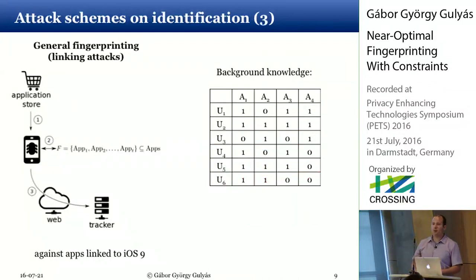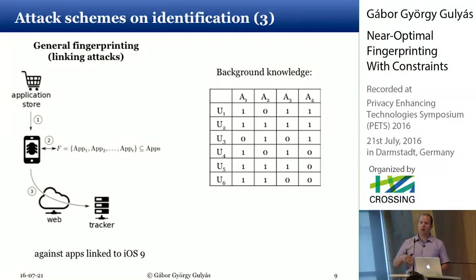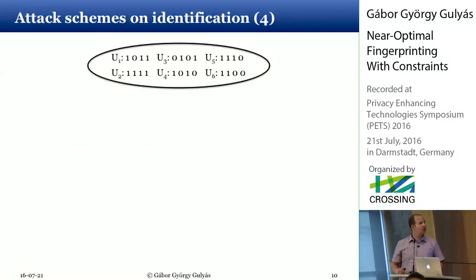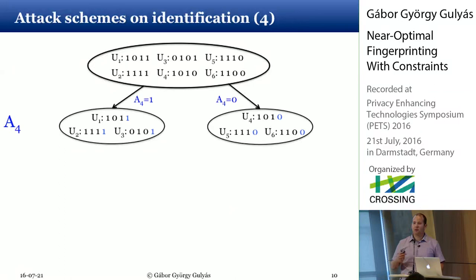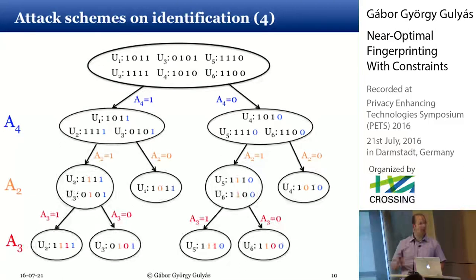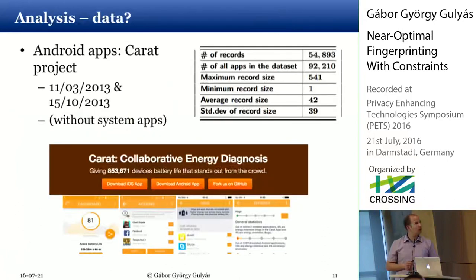The other attack we considered is general fingerprinting. Here the attacker obtains a dataset and calculates a list of applications good for fingerprinting and tracking users in general — such that detecting the presence of those applications on a device makes the generated identifier very likely to be unique, though not guaranteed. This also works by first selecting the most distinguishing attribute, creating equally sized groups of users, and iterating until reaching the furthest distinguishable point.